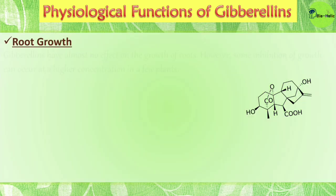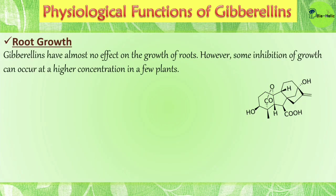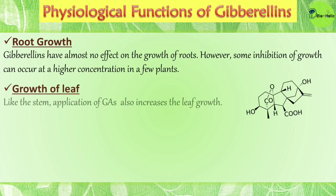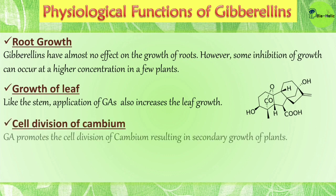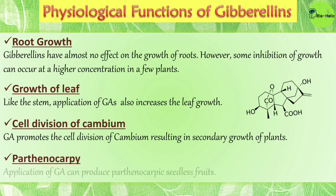Gibberellins have almost no effect on root growth; however, some inhibition can occur at higher concentrations in a few plants. Like the stem, application of gibberellins also increases leaf growth. Gibberellin promotes cell division of the cambium, resulting in secondary growth of plants. Finally, the application of gibberellins can produce parthenocarpic seedless fruits.